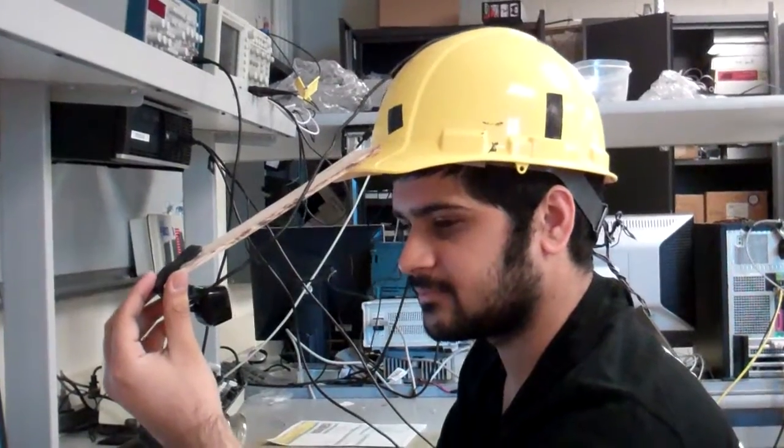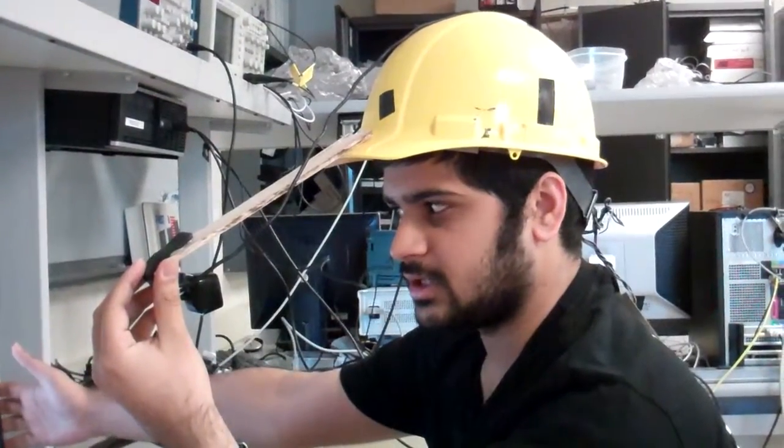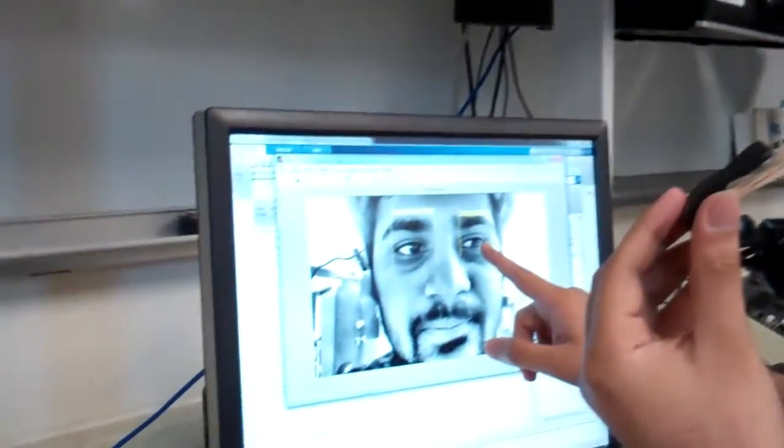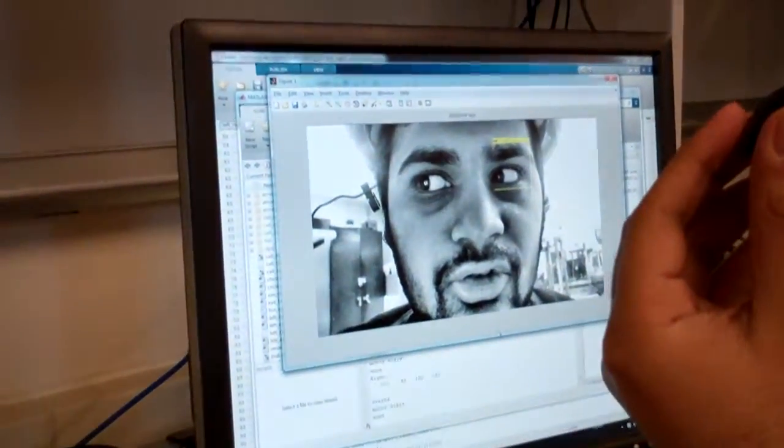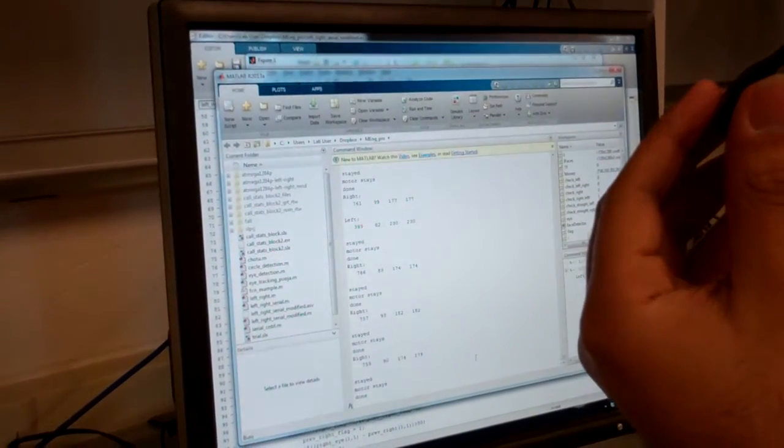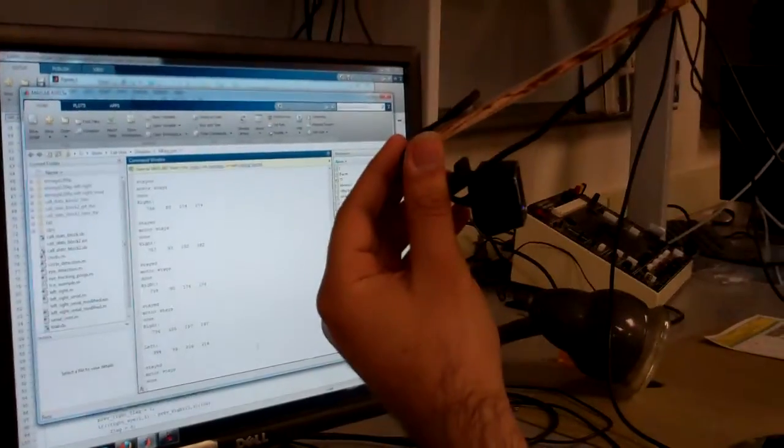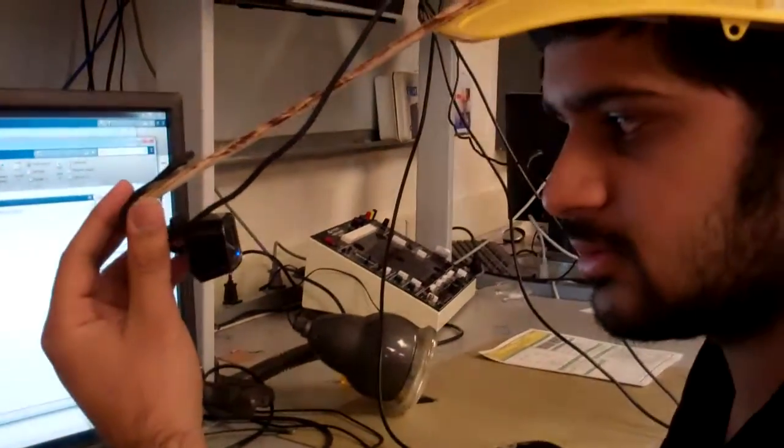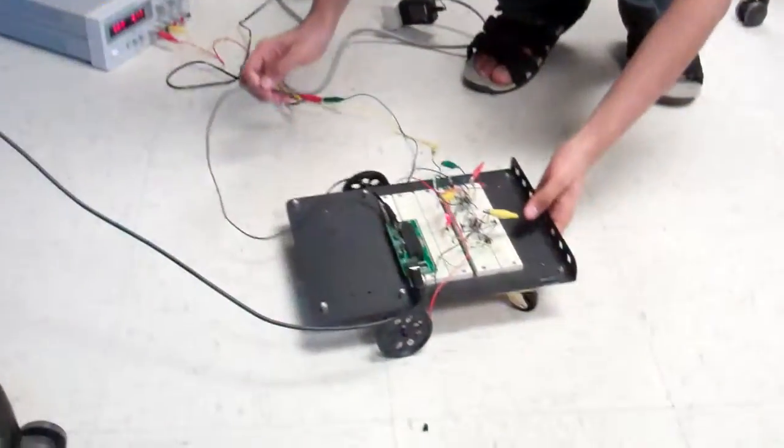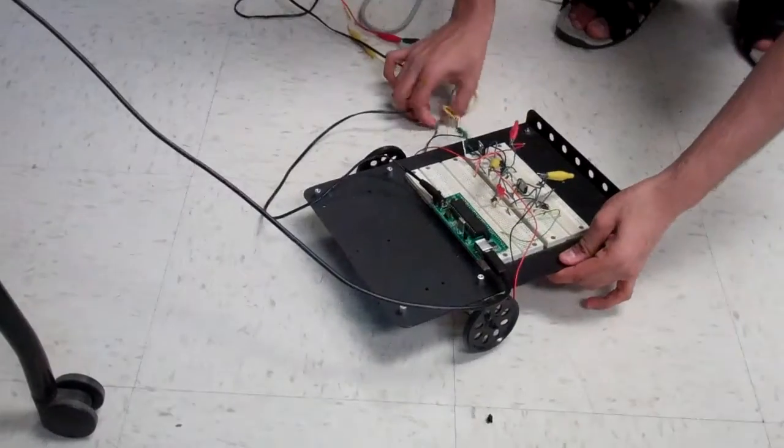So here's the debug screen where I'm just showing my eyes. It just detects my eyes, the MATLAB program. And then what I do is, for example, when I look in the left side, and my wheelchair will move on the left side after that. So you're moving, you're looking left and it's moving left.